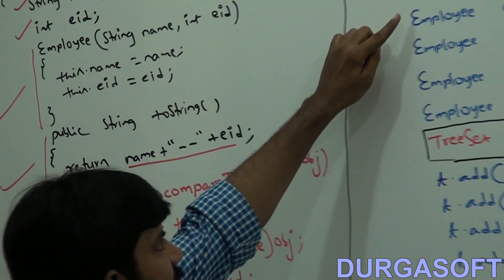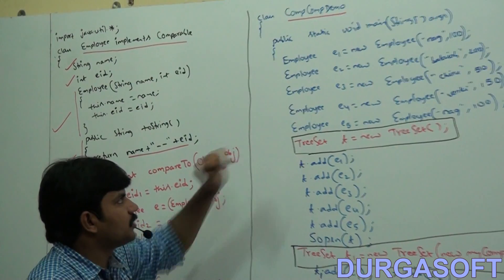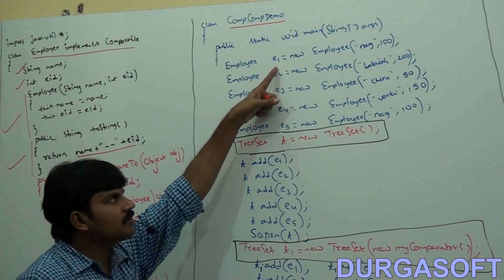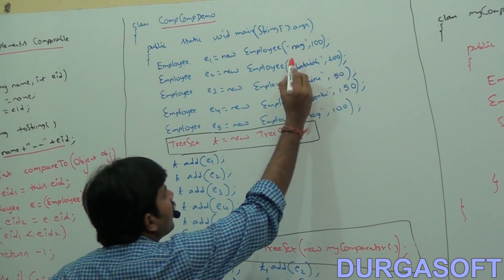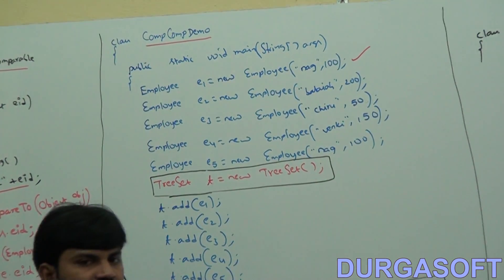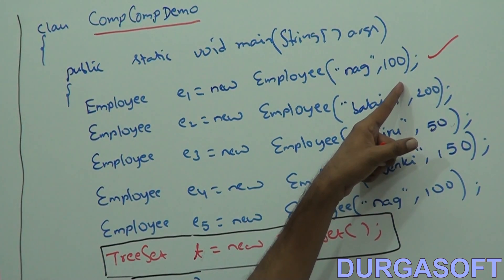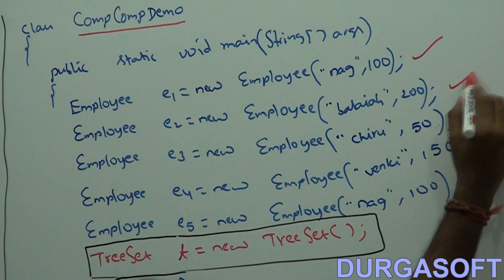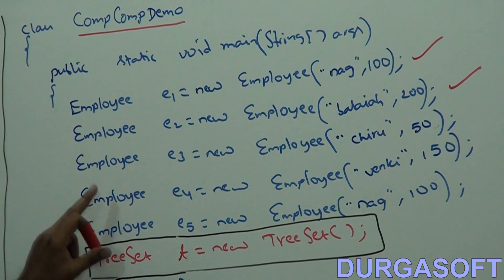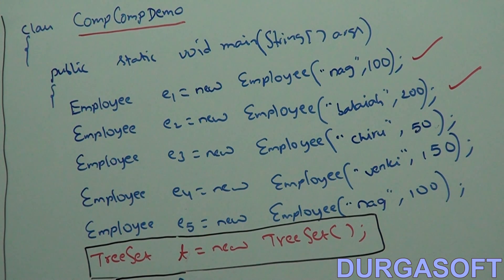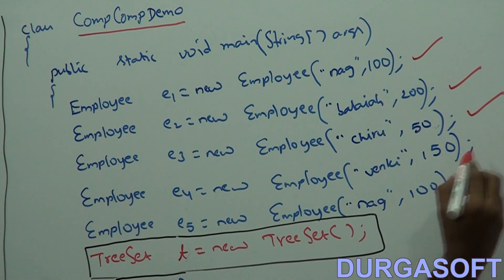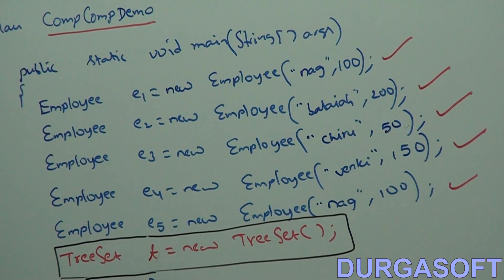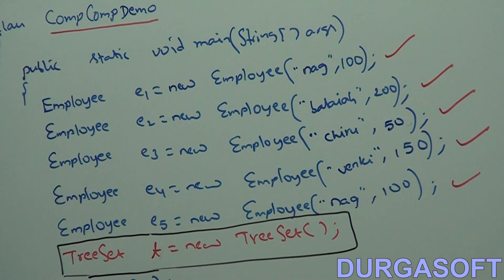Now I'm creating multiple Employee objects. Employee E1 is new Employee of Naag with ID 100. Employee E2 is Balaya with ID 200. Employee E3 is Chiru with ID 50. There are Employee E4 and Employee E5 as well — five total employee objects.